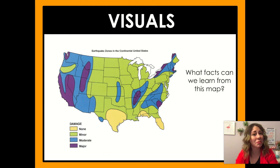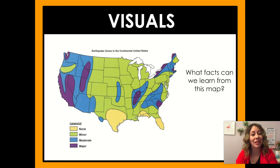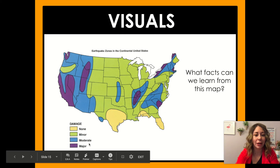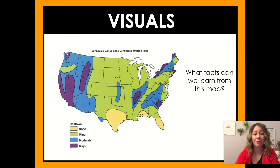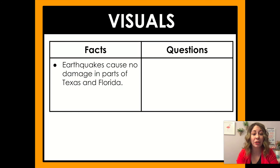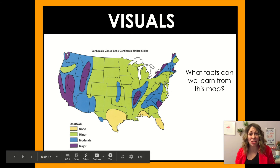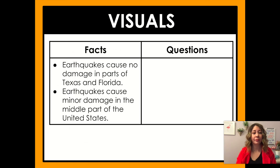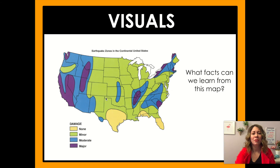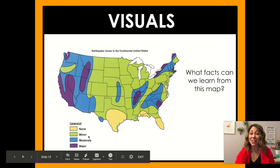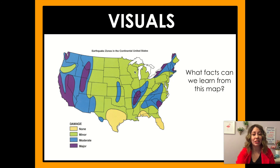From visuals we can learn different facts, even when there aren't many words. The map is titled 'Earthquake Zones in the Continental United States,' and the key shows damage levels: none, minor, moderate, and major. We could say earthquakes cause no damage in parts of Texas and Florida — I can see right here on the map 'damage: none' for those areas. Another fact: earthquakes cause minor damage in the middle part of the United States, since most of the central area is green, meaning minor damage. So that's another fact I can learn from the map.